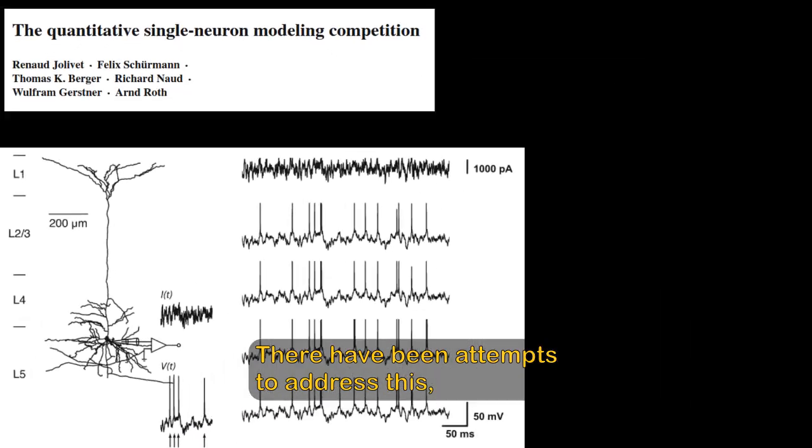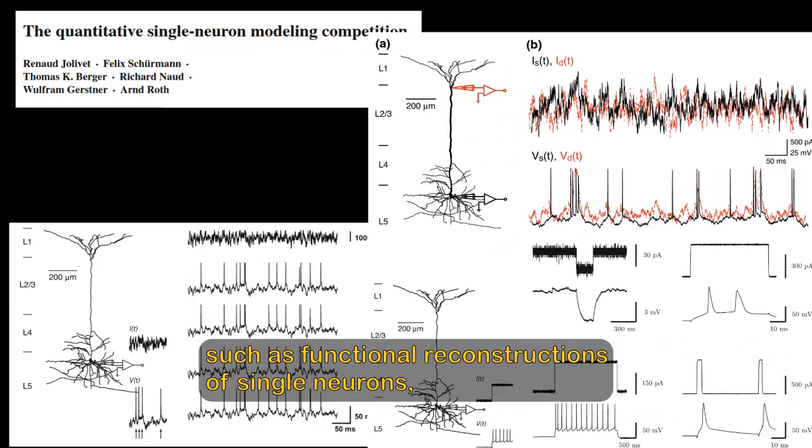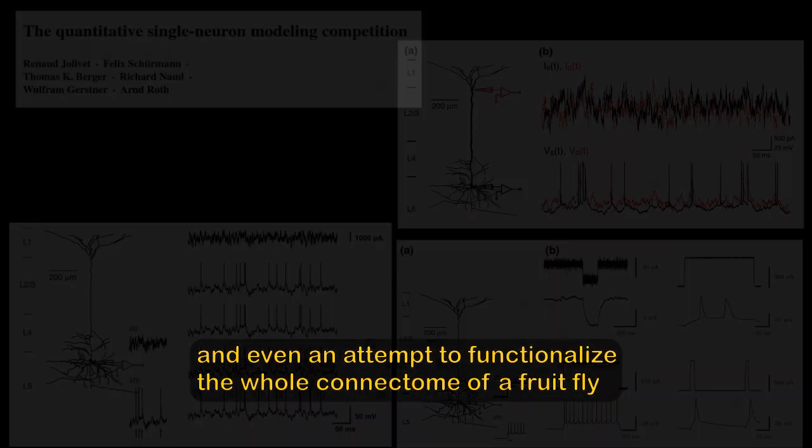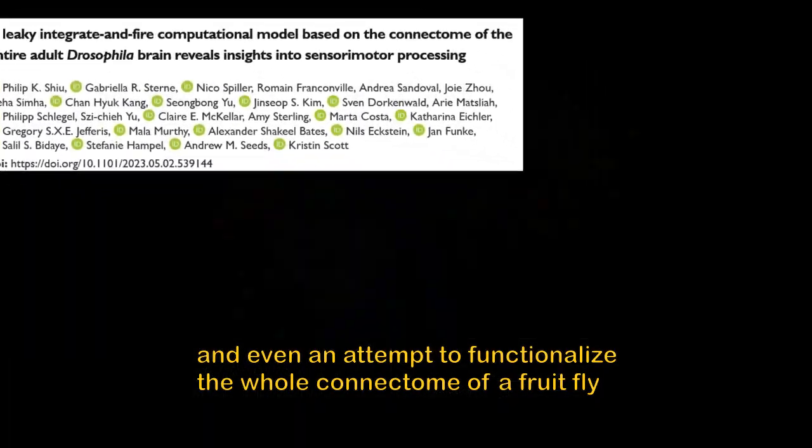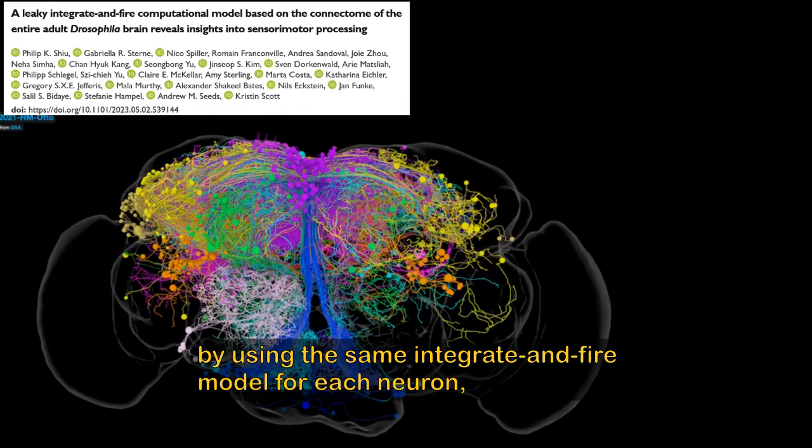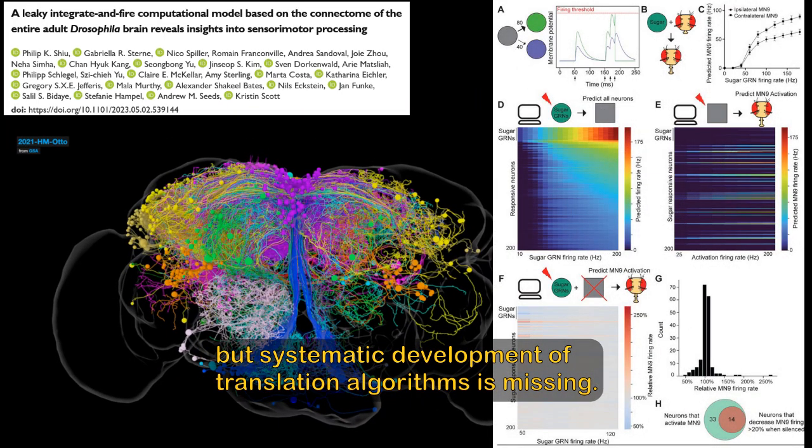There have been attempts to address this, such as functional reconstructions of single neurons and even attempts to functionalize the whole connectome of a fruit fly by using the same integrate-and-fire model for each neuron. But systematic development of translation algorithms is missing.